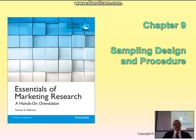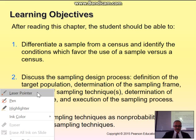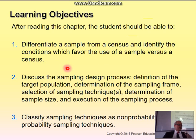This chapter talks about sampling design and procedures. After reading this chapter, students should be able to differentiate a sample from a census and identify conditions which favor the use of a sample versus a census. We will discuss the sample design process, including defining the target population.